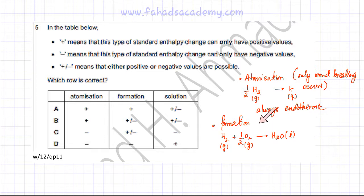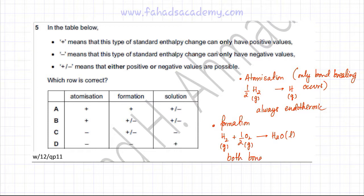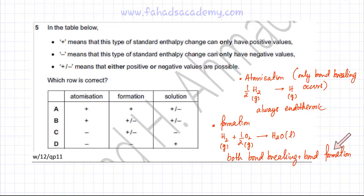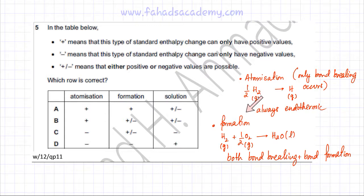In this reaction of enthalpy change of formation, you need to break the bonds of hydrogen and oxygen molecules and then reform new bonds. So this reaction involves both bond breaking, which is endothermic, and bond formation, which is exothermic. Since both are involved, it depends: if bond breaking requires more energy than bond formation releases, the overall reaction is endothermic, and vice versa. Therefore, the standard enthalpy change of formation could be both positive or negative — plus or minus.